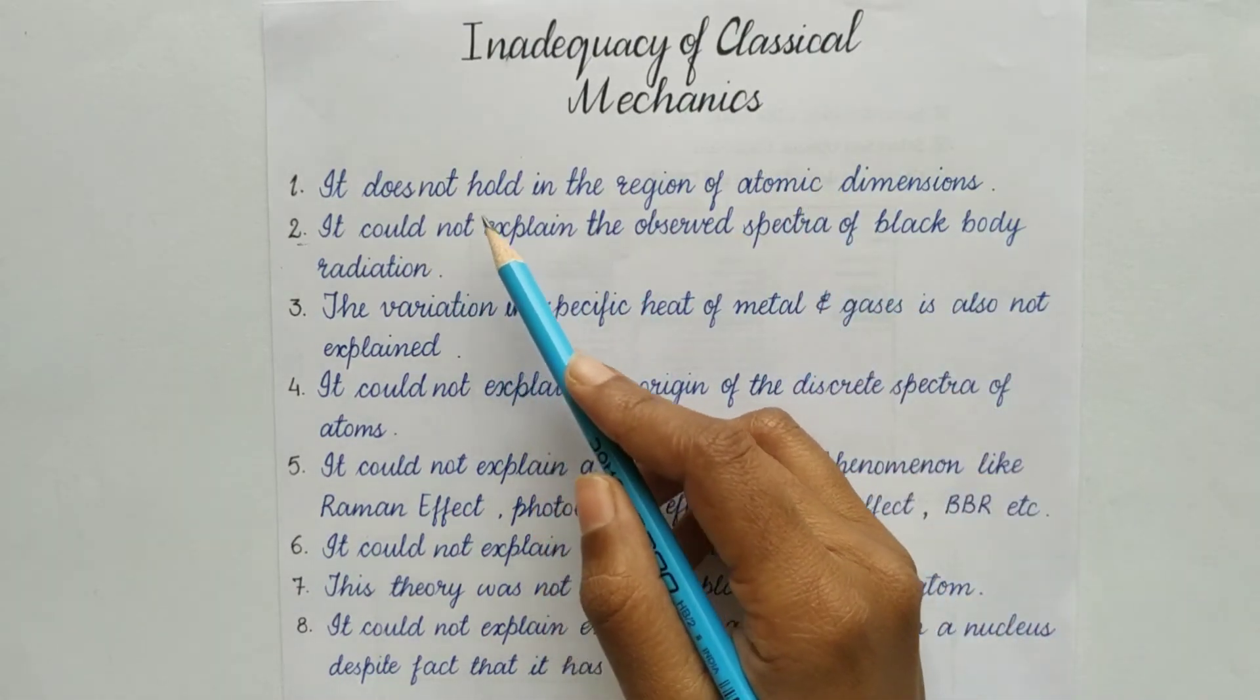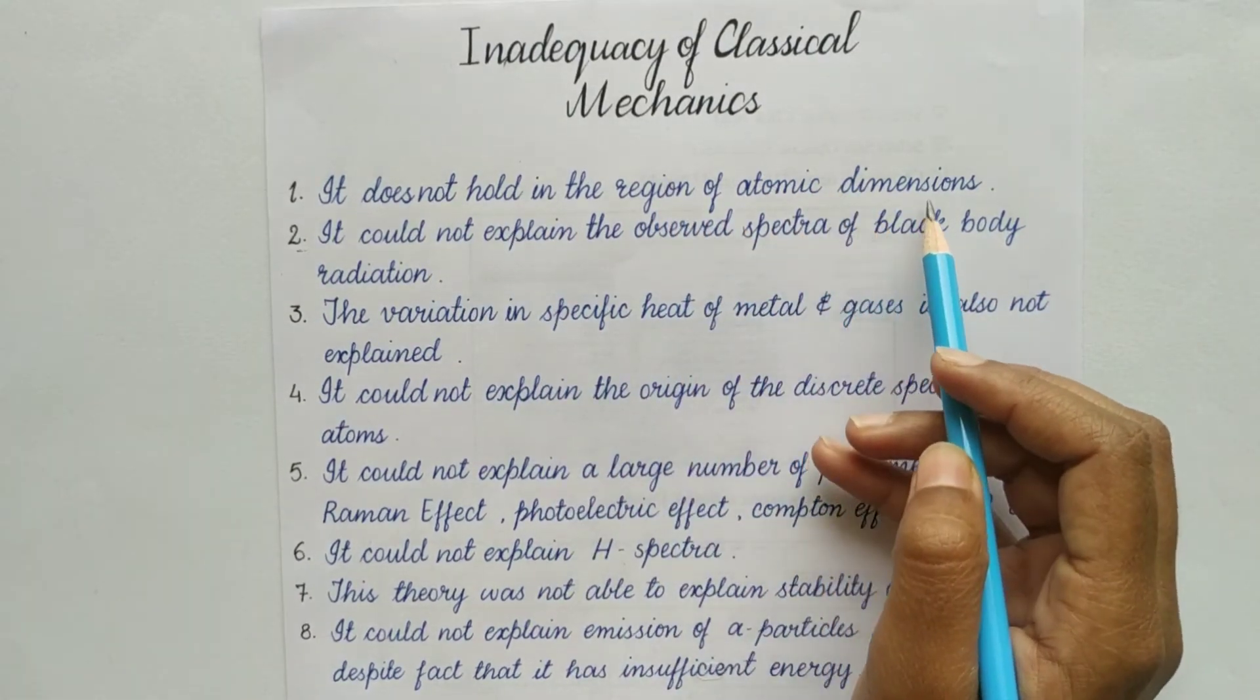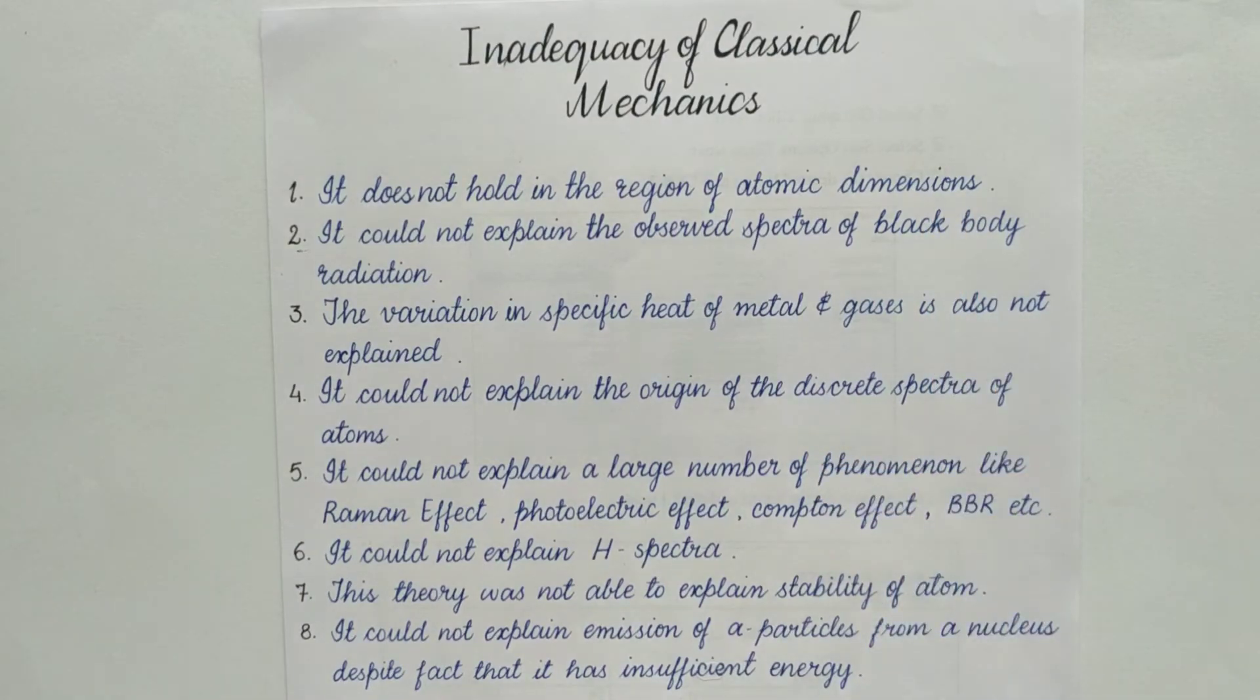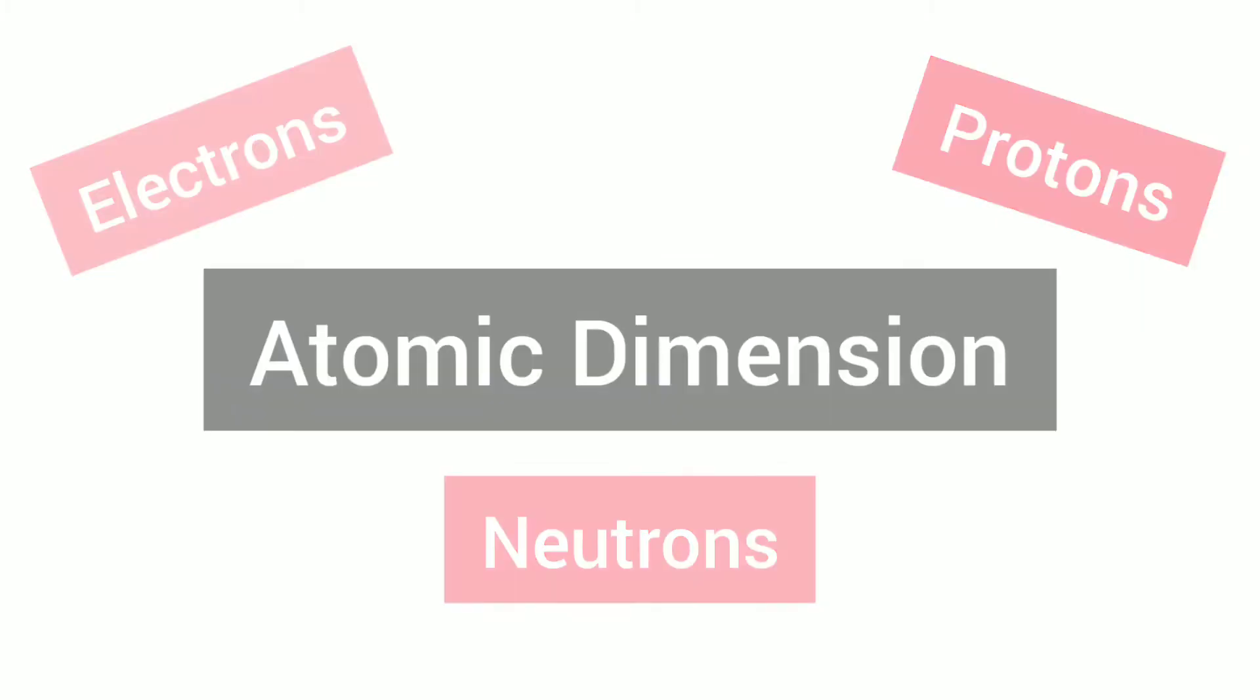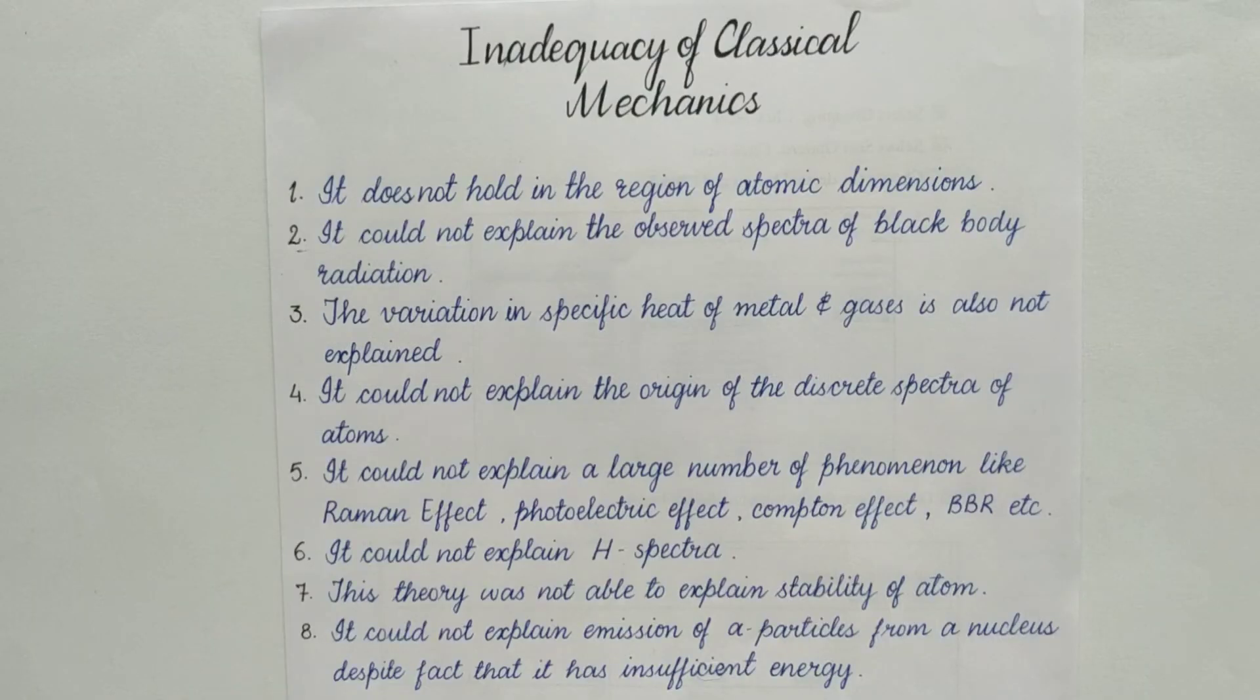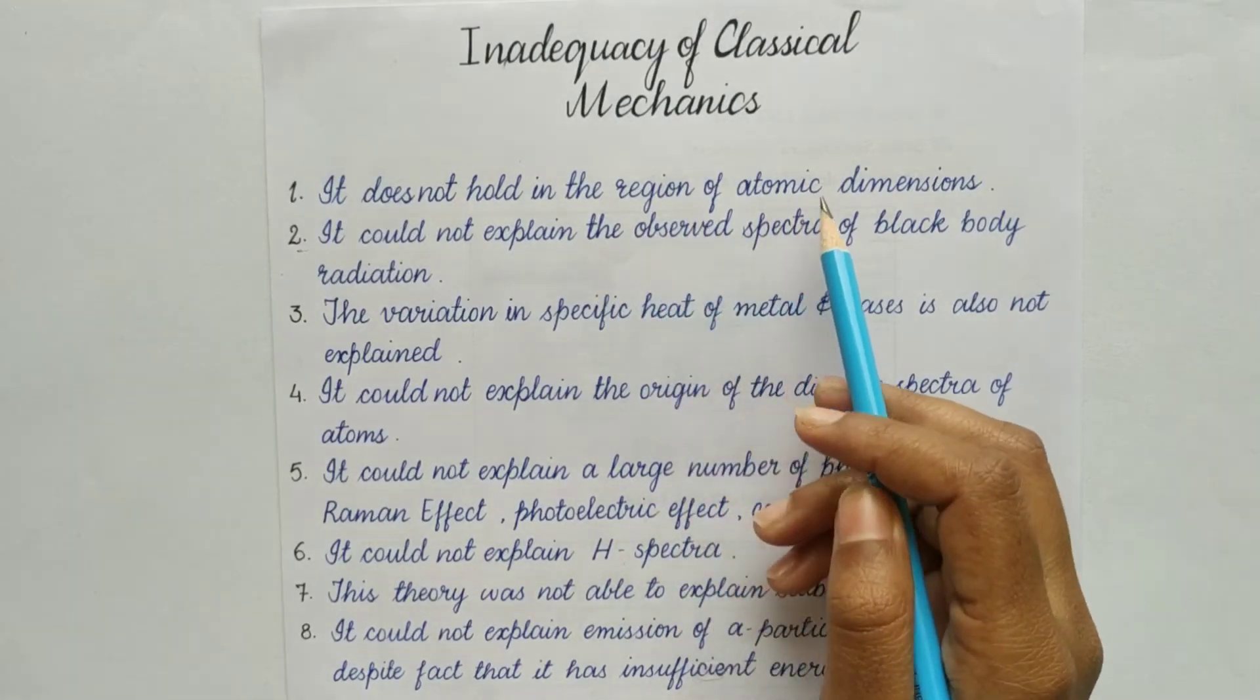Now coming to the points of the inadequacies of classical mechanics. Number one, it does not hold in the region of atomic dimensions. Atomic dimension means everything that atom consists of like electrons, neutrons, protons, etc. So, classical mechanics was not applicable on these particles or in this minor dimension or unobservable dimension. It was failing to explain the motion of these subatomic and elementary particles.